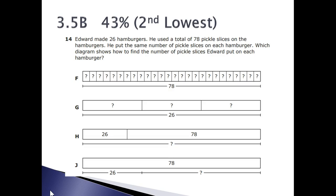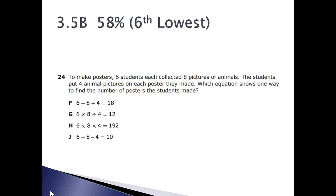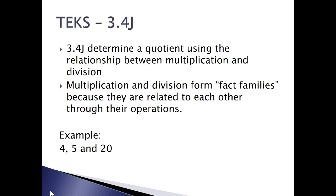Now, 3.5B was tested on STAR. We had forty-three percent mastery. Notice it's the second lowest scoring item. The correct answer was F. So, the kids need a lot of practice with strip diagrams. Also, number twenty-four was our sixth lowest, where they had to choose the equation. So, the kids really need to be exposed to all three types. The next text we'll be teaching is 3.4J, where the kids are going to determine a quotient using the relationship between multiplication and division. So, they have to think of four times five is twenty, and twenty divided by five is four.